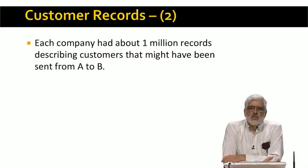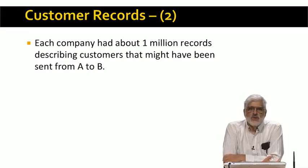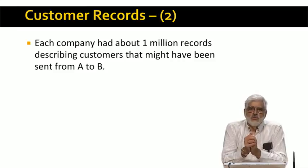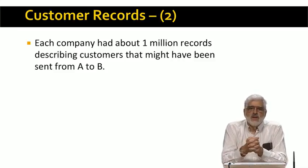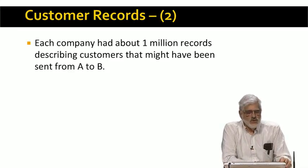To set the scale of the problem, each company had about a million records that might represent a customer that A had provided to B. That's a tiny database by today's standards. But notice that there are a trillion pairs of records — one from A and one from B — that might be the same person. It is way too expensive to examine and evaluate a trillion pairs of records.